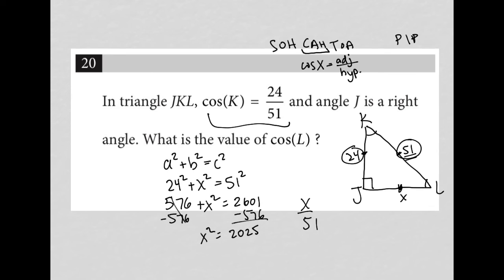And then I'm going to square root both sides of this equation. So the square root of 2,025 is 45. So X is equal to 45.